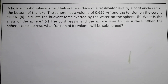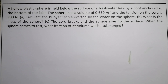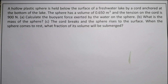We have this next question: a hollow plastic sphere is held below the surface of a freshwater lake by a cord anchored at the bottom of the lake. The sphere has a volume of 0.65 cubic meters and the tension on the cord is 900 newtons. The questions are: (a) calculate the buoyant force, (b) what is the mass of the sphere, and (c) the cord breaks — what fraction of its volume will be submerged? This is a fairly long problem, but some parts are easy while others need to be understood first.